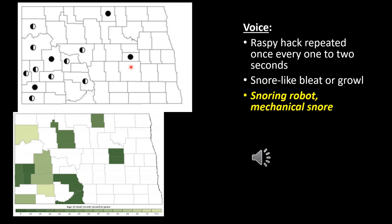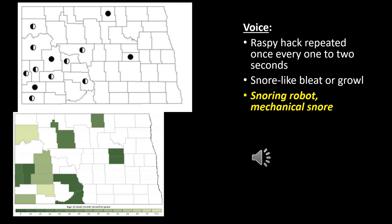They don't have a trill or scream — they have a snore. It sounds like a robot snoring: a raspy hack repeated every second or two. They come out and do mass breedings during rain events — you might hear fifty of them calling all at once, then never see them again for years because they spend so much time underground.